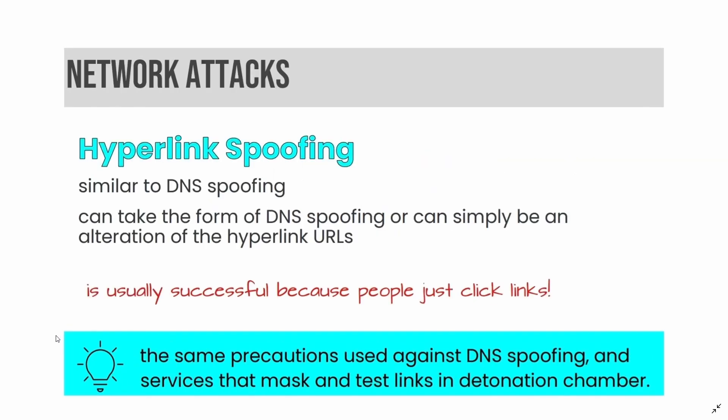Another form of network attack is hyperlink spoofing. Hyperlink spoofing is very similar to DNS spoofing — it can take the form of DNS spoofing or simply be an alteration of the hyperlink URLs. It is usually successful because people just click links without verifying them.